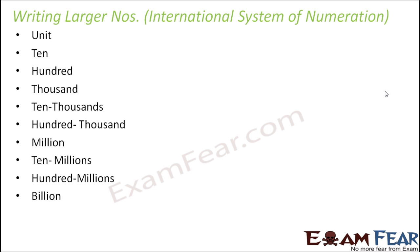How is the international system different from the Indian system? Initially the positions are the same: units, tens, hundreds, thousands, ten thousands. But after ten thousands, in the Indian system we had lakhs, while in the international system we do not have lakhs — we have hundred thousands. So in thousands you have three levels: thousand, ten thousand, hundred thousand. Then next we have million, ten millions, hundred millions, and then billions.